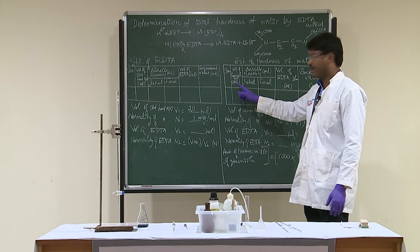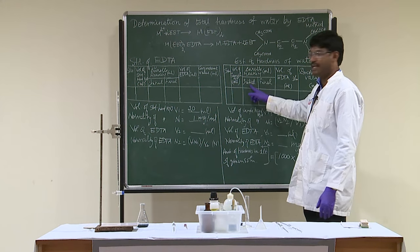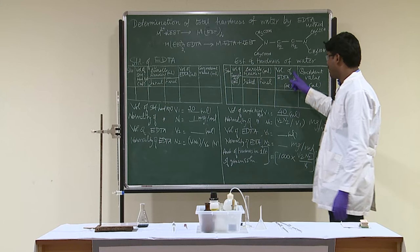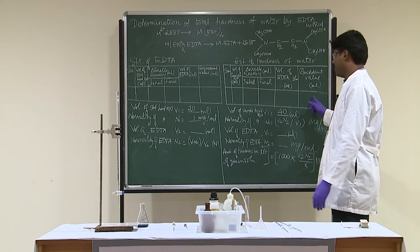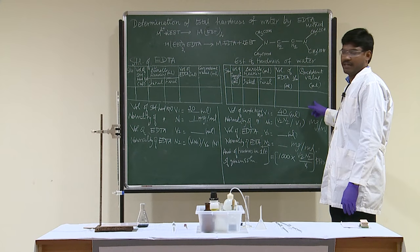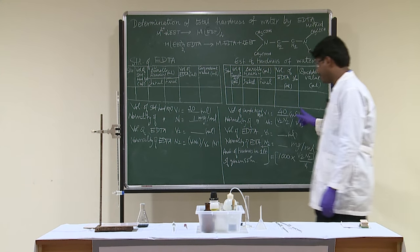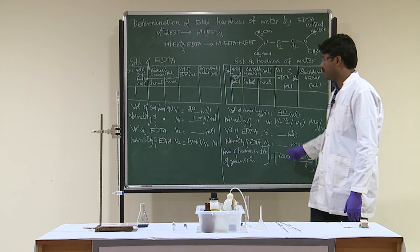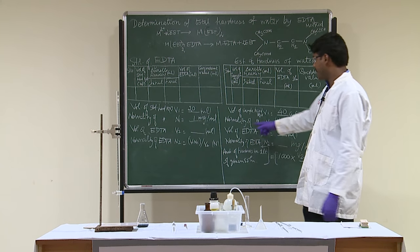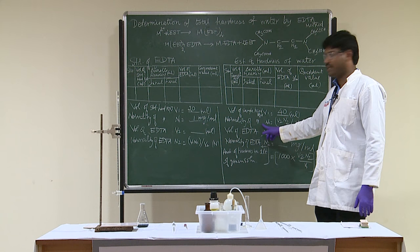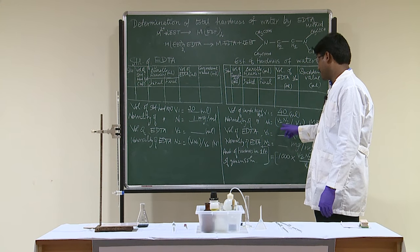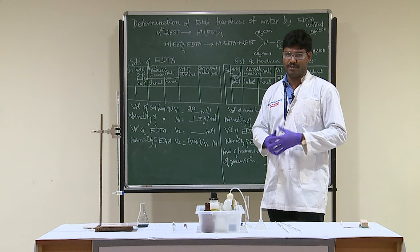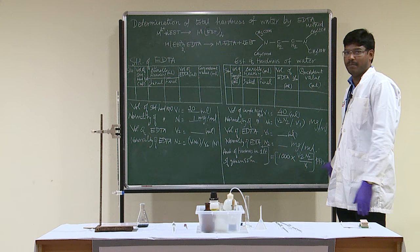The volume of sample hard water taken is 40 ml. The initial burette reading is 0 and the final reading is when you observe the steel blue color. The volume of EDTA used is the final minus the initial — record the concordant value by repeating the experiment. Using V₂N₂ = V₁N₁, the normality of the sample hard water is N₁ = V₂N₂ / V₁ (in mg/ml). Multiply by 1000 to convert to PPM — parts per million.